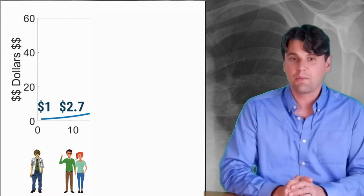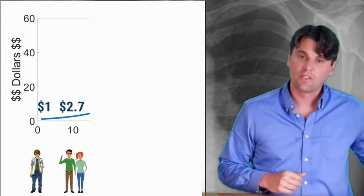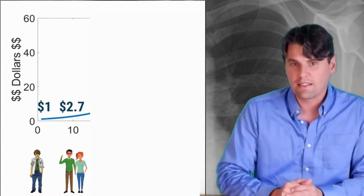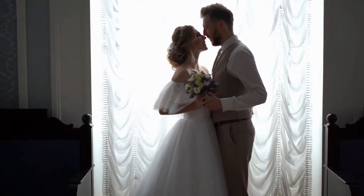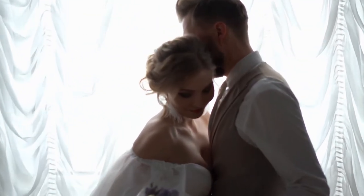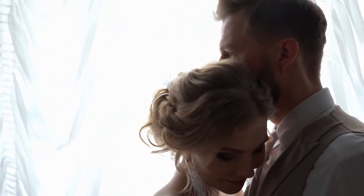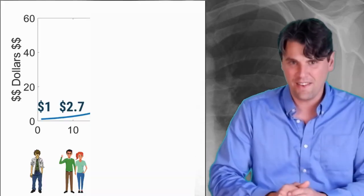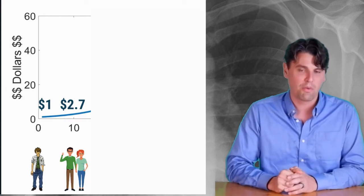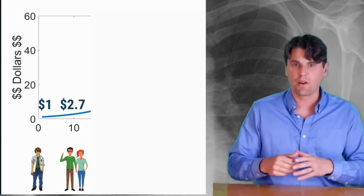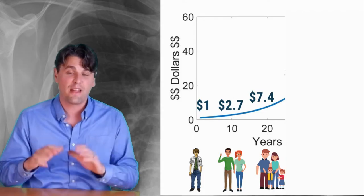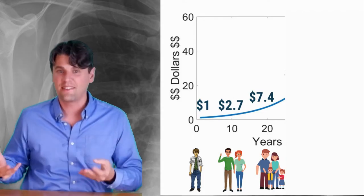Ten years later, when you're 30 years old - maybe you've met someone significant and you're thinking about getting married - you've got $2.70. Remember $2.70, you'll want to remember that number. It's a little more than you originally had. Twenty years after you started that $1 investment, at age 40, you're now at $7.40.